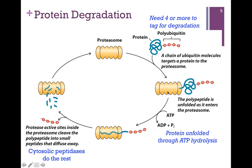In order for the proteasome to digest those peptide bonds, it needs to unfold the protein, and that's going to take energy. Proteins fold spontaneously, which means unfolding is non-spontaneous and requires energy. So we use ATP hydrolysis to provide the energy needed to unfold the protein. As it's unfolded by the proteasome, the peptide bonds are clipped and it's broken into small peptides that diffuse away. Normal cytosolic peptidases then digest those peptides into single amino acids. To clarify: proteases digest proteins, peptidases digest small peptides.